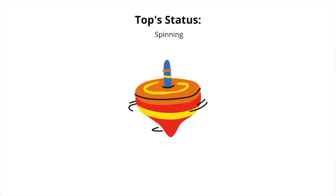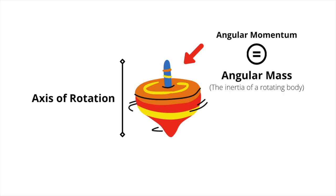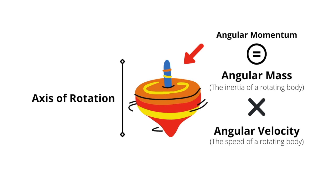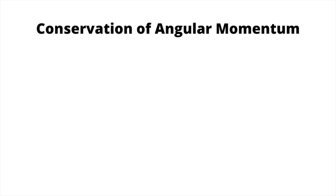Now that the top is spinning, here are some important concepts. The top spins on its axis of rotation, which is an imaginary line that goes through the top. And the top's angular momentum, which is the product of angular mass — the inertia of a rotating body — times the angular velocity, the speed of a rotating body. This teaches an important concept called the conservation of angular momentum.